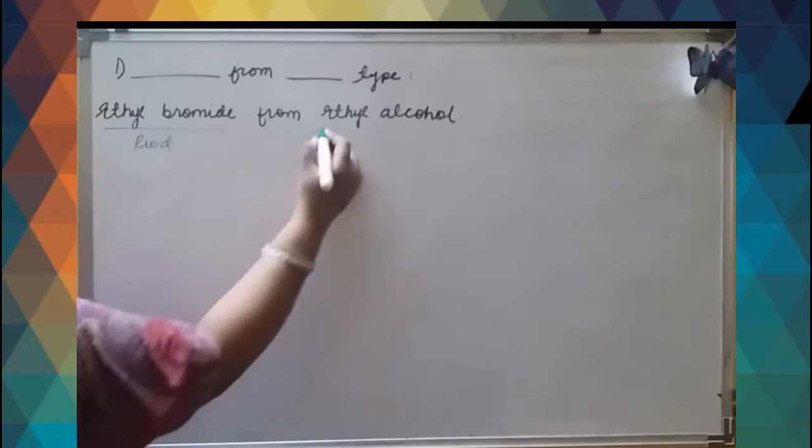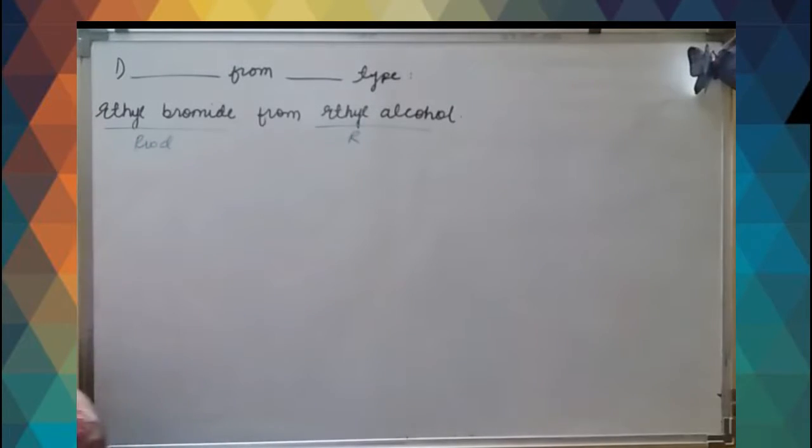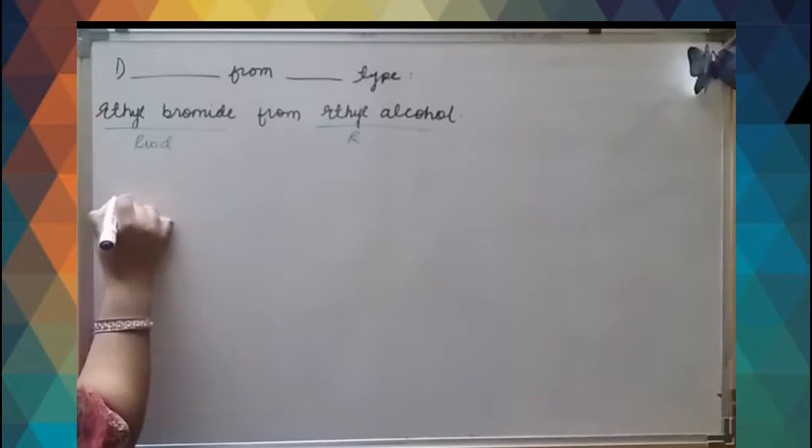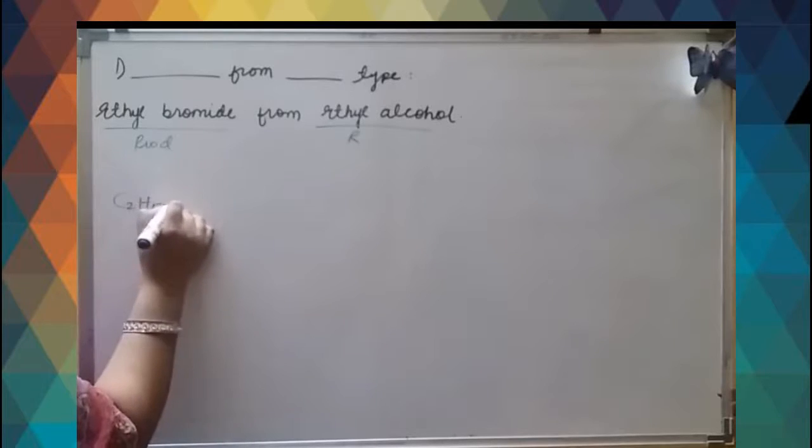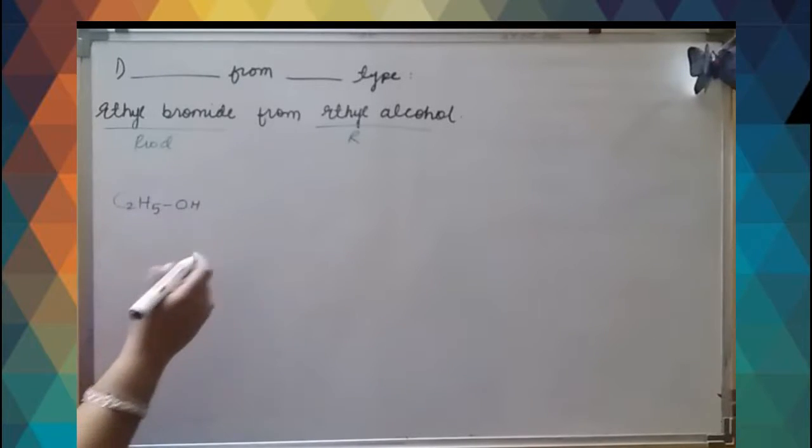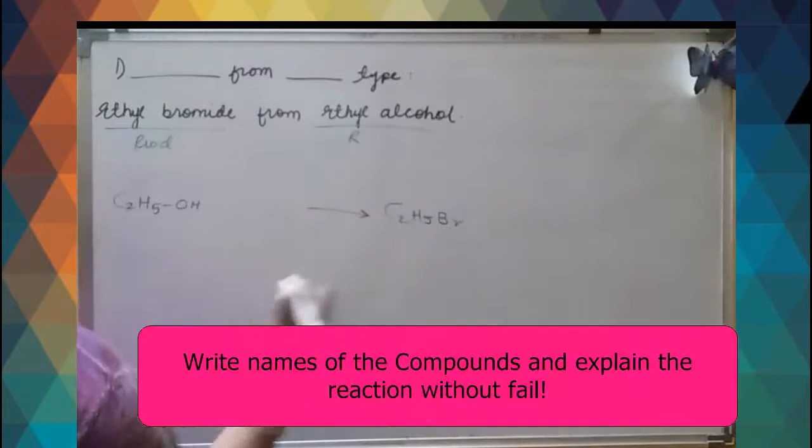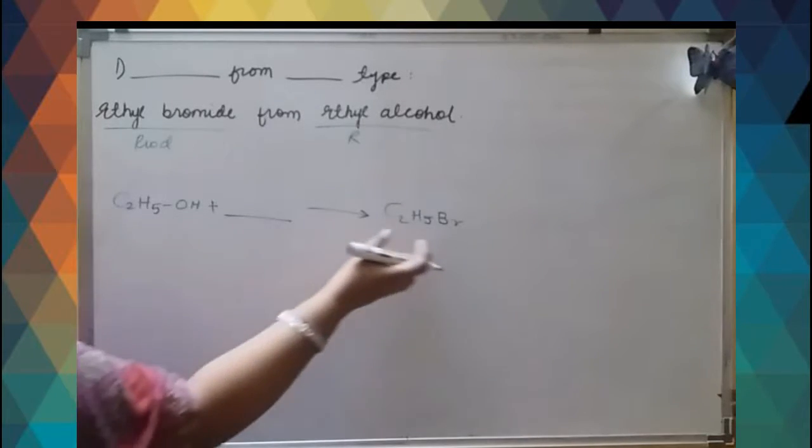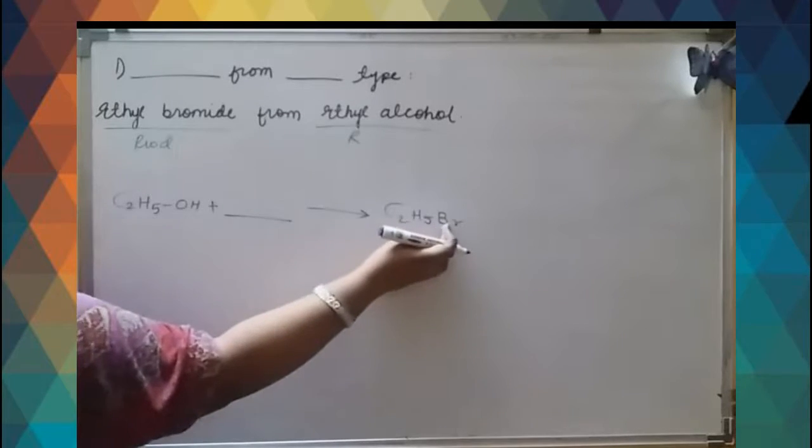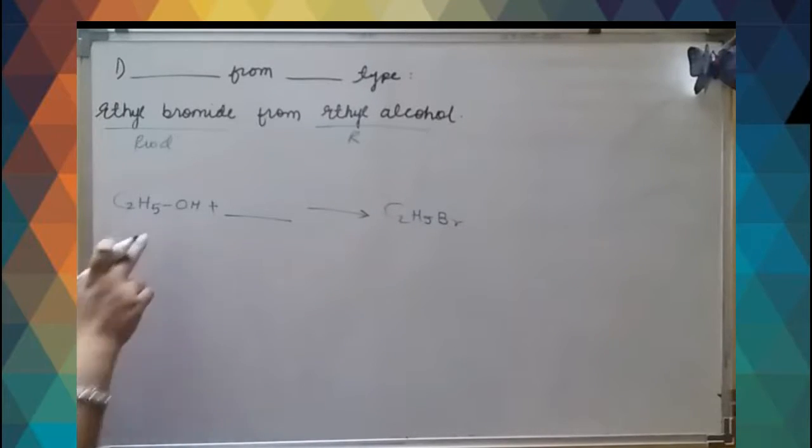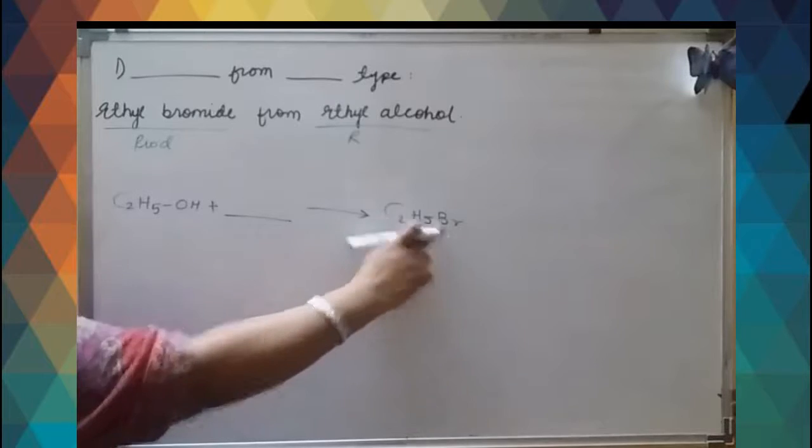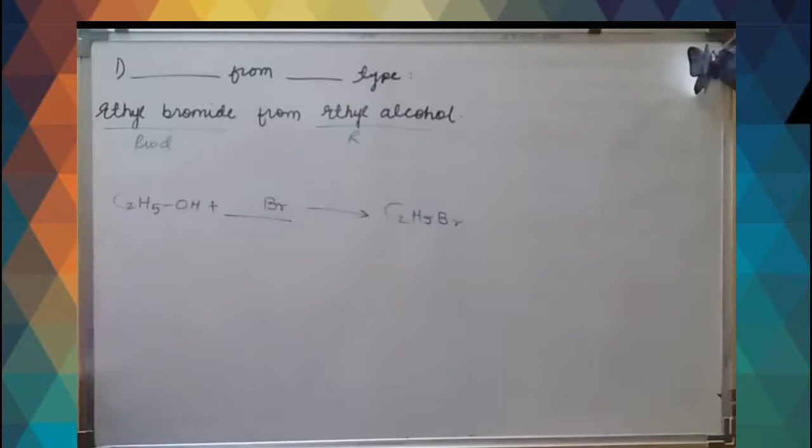What is the reactant? Let us first write the formula of ethyl alcohol - C2H5OH, alcohol means OH. In the product you have to find ethyl bromide, that means C2H5Br. You have to add here something that will lead you to get ethyl bromide. There is something additional in product which is not in reactant - Br.